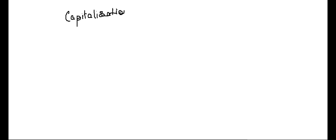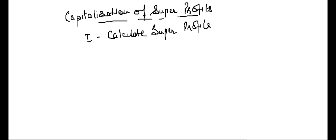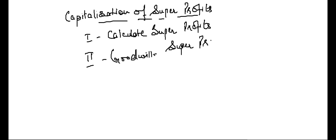The second method is capitalization of super profits. This is very simple. First step: calculate super profits. Super profits tell us what extra earning we are doing over and above the normal rate of return. For goodwill, we capitalize that extra earning. Goodwill = super profits × 100 / normal rate of return. This is how we calculate goodwill under capitalization of super profits.